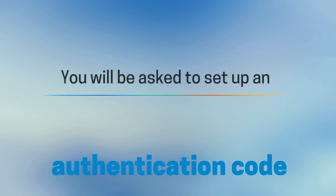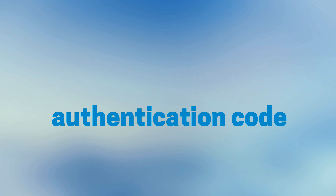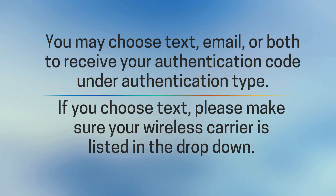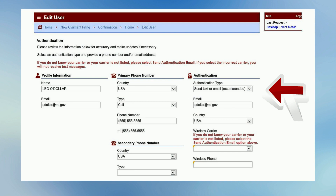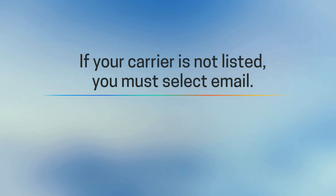You will be asked to set up an authentication code. You may choose text, email, or both to receive your authentication code under 'Authentication Type.' If you choose text, please make sure your wireless carrier is listed in the drop-down. If your carrier is not listed, you must select email.